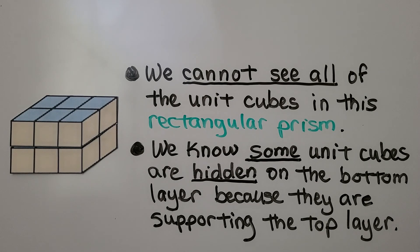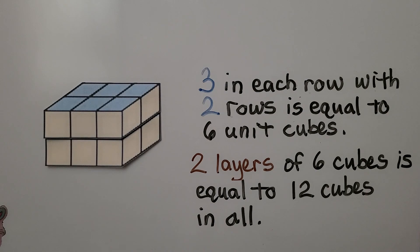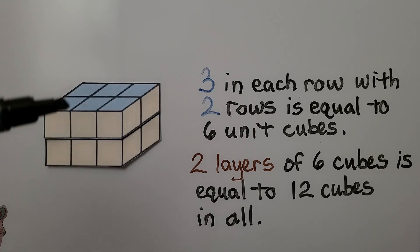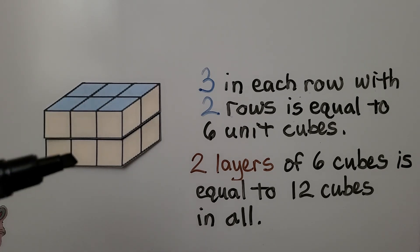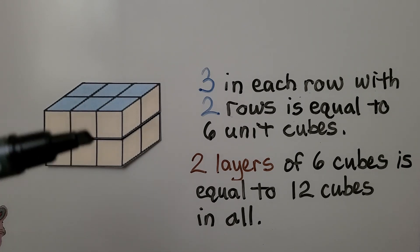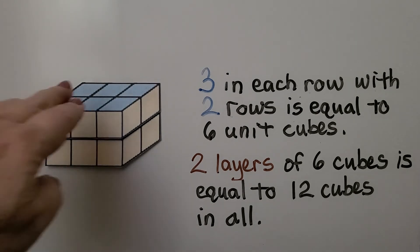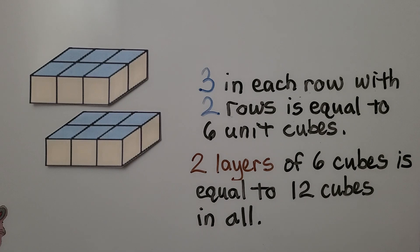We use our imagination and picture that they're back there. We have three in each row, so there's two rows. That's six unit cubes. We have two layers. That means we have six plus six, and that's equal to twelve in all.